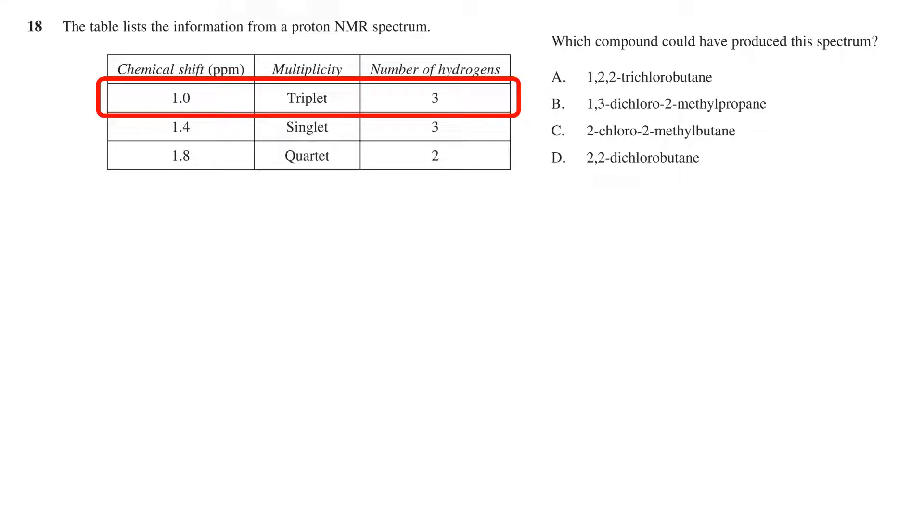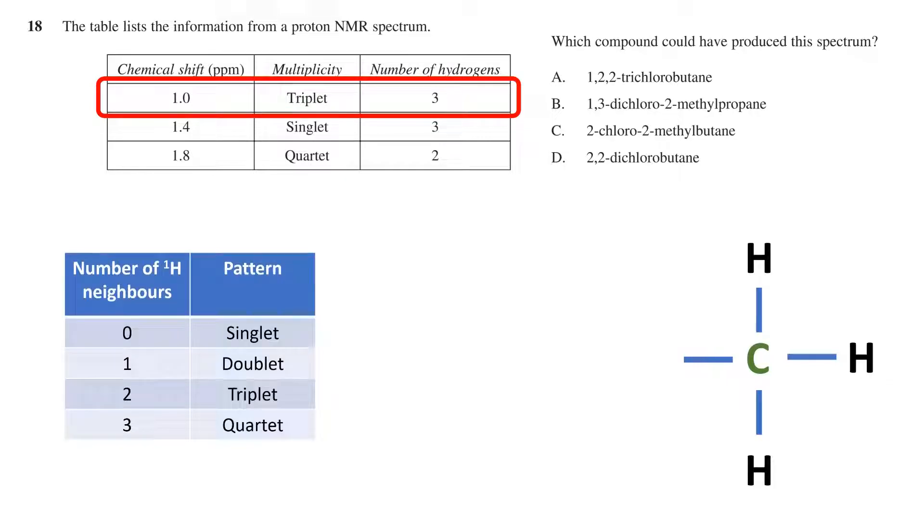The first signal has the lowest chemical shift, is the triplet, and there are three hydrogens in this environment. With three hydrogens, this suggests it is a carbon at the end of the molecule, as three bonds would be used for the hydrogens, and only one left in order to attach to the rest of the molecule.